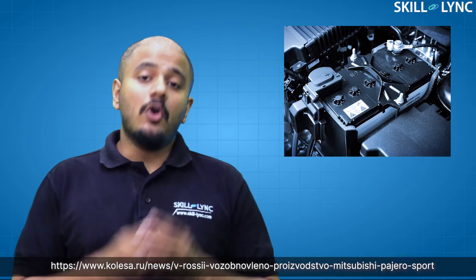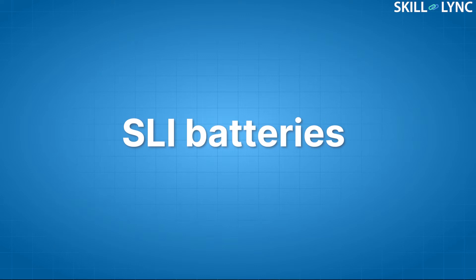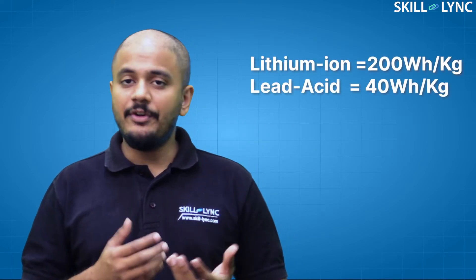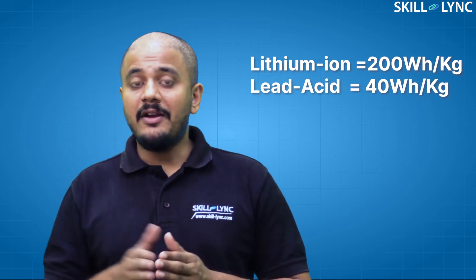These batteries are commonly used in automobiles to supply power to the starter motor, the lights, and the ignition, hence they get the name SLI batteries. These batteries are much heavier and offer less voltage and capacity than lithium-ion batteries of the same weight.